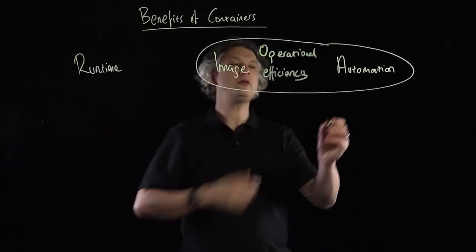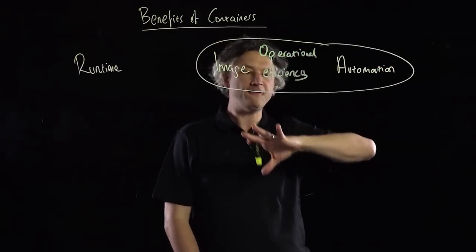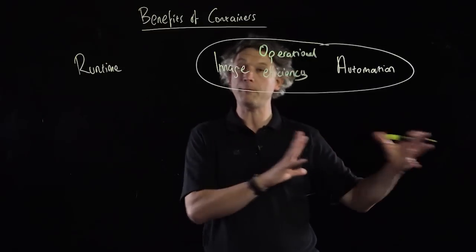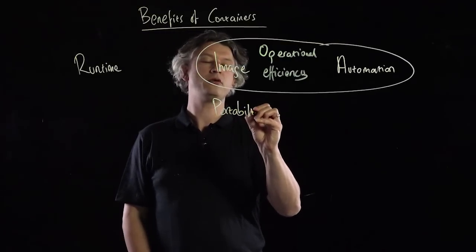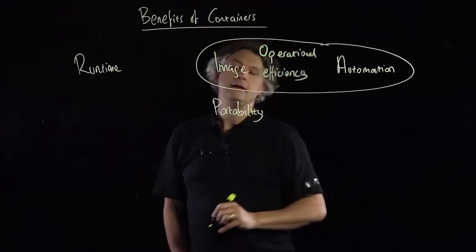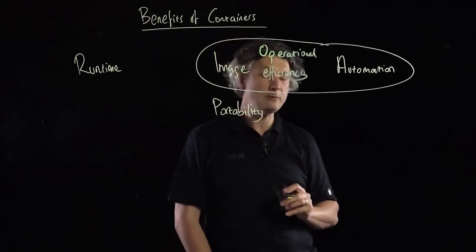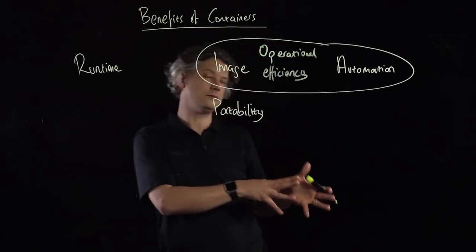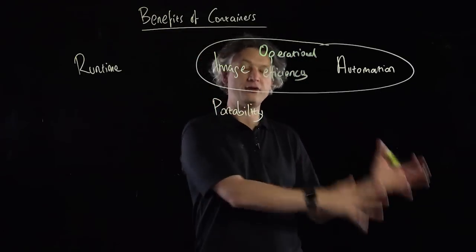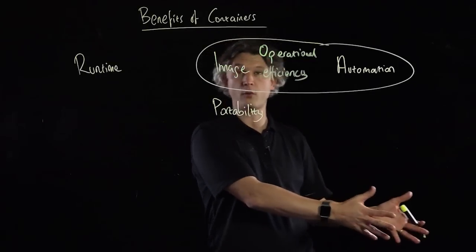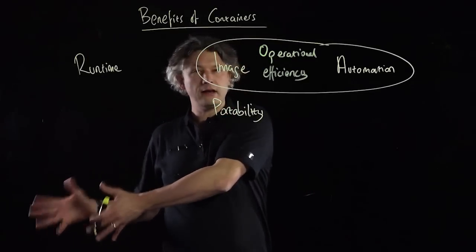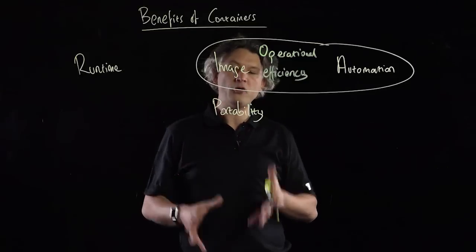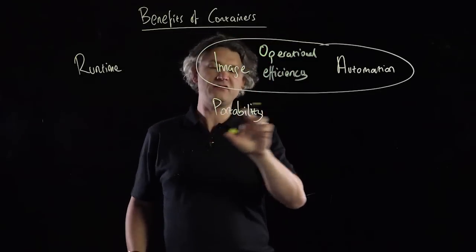Let's think about operational efficiency. We talked about automation and the way containers can flow through systems from a developer's laptop into a registry, out into maybe Jenkins, and then out again into somewhere else. This whole pipeline that we speak about is greatly facilitated by portability. What portability means is: if I build a container on my laptop, I can run that container anywhere there is a compatible operating system and a compatible control plane.